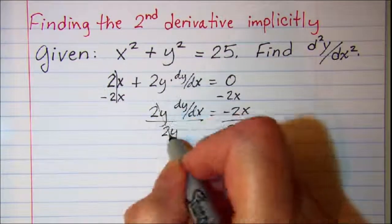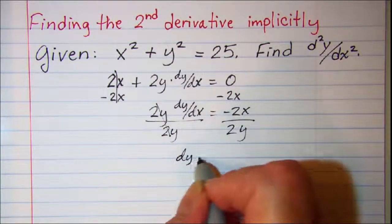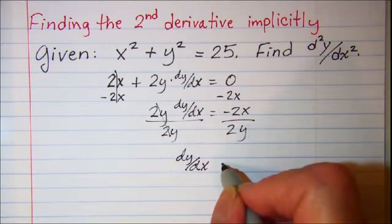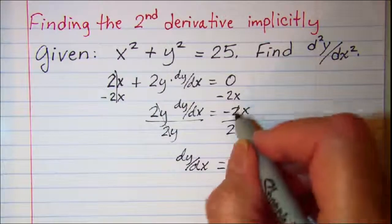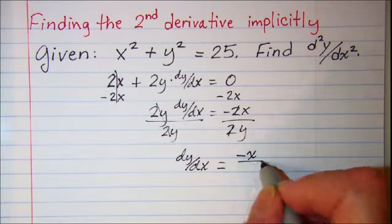So cancel and I have dy/dx is equal to negative x over y.